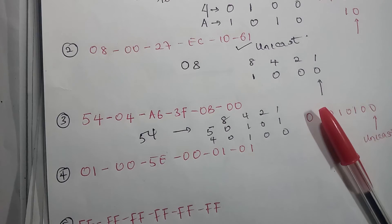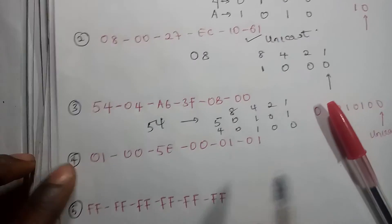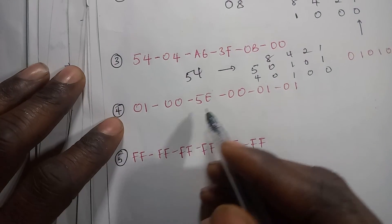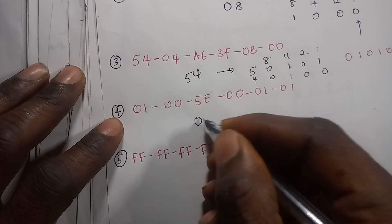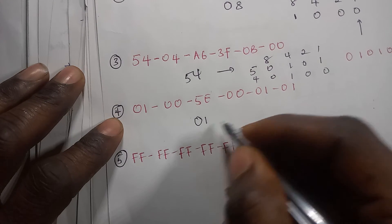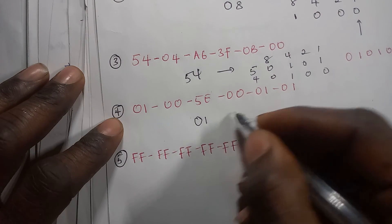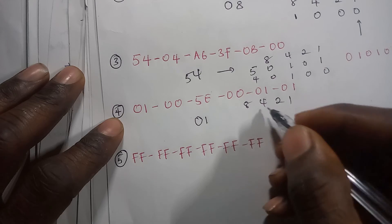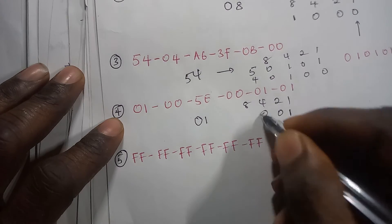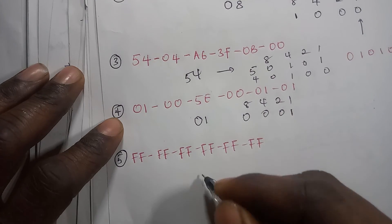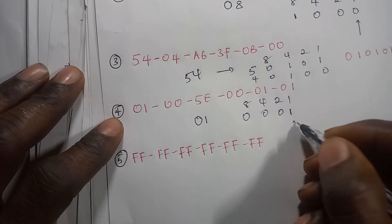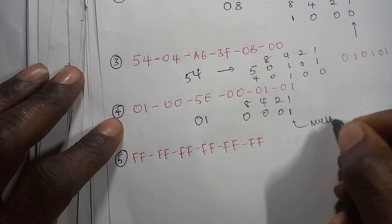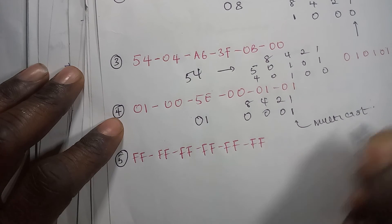Let's proceed. The next one is 0, 1. We get 0, 1. Using 8, 4, 2, 1, we just need to turn the 1 on. The rest will be 0. So in that case, it is ending with 1. It is multicast.